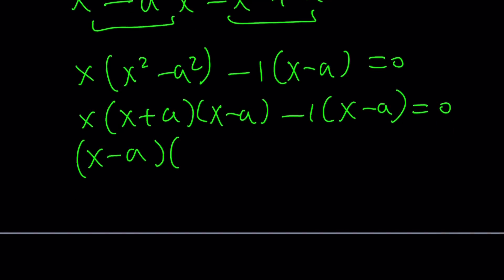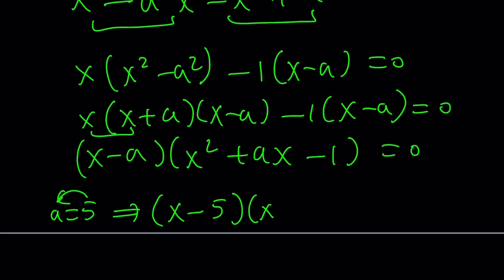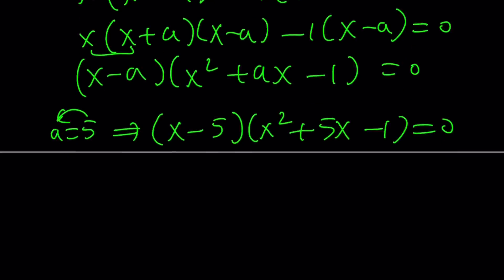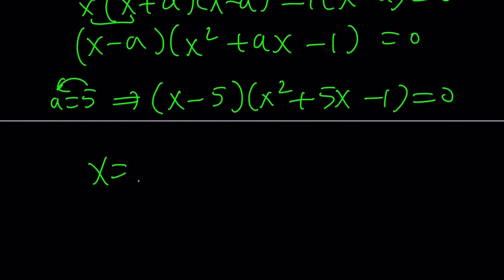And then you can go ahead and write this as x times (x plus a), which is (x squared plus ax minus 1) equals 0. Now if you plug back in a equals 5 or 5 equals a, you're going to get the exact same equation that we got before. And the solutions are going to be the same. Basically, you're going to get x equals 5. x equals 5.